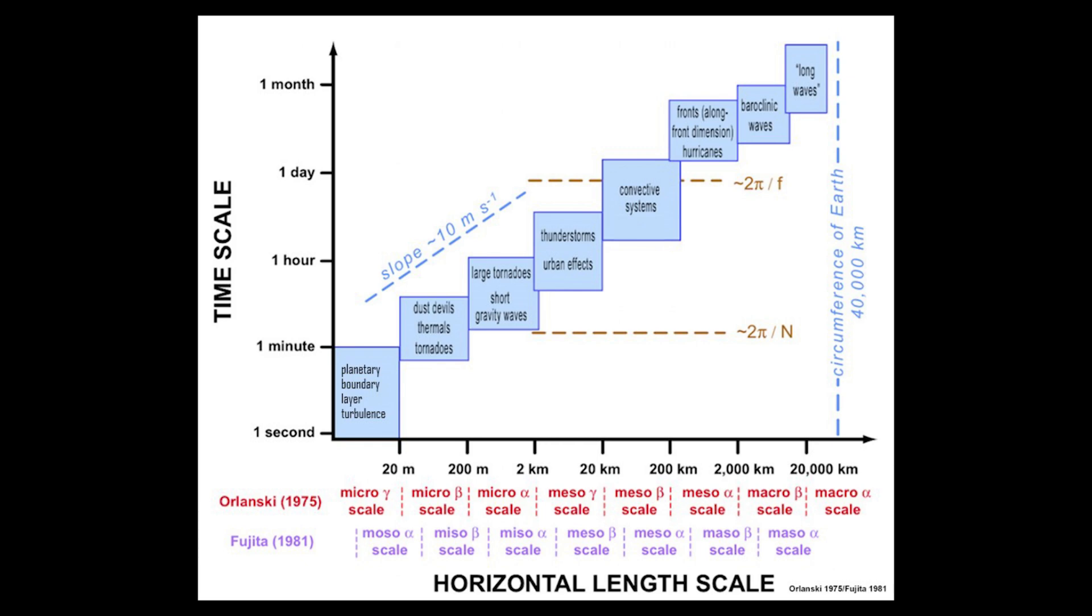When figuring out what the smallest scale feature is that a model can resolve, you look at the lower end of that feature. Using thunderstorms as our example, which cuts off around 2 kilometers, the minimum grid spacing to effectively resolve a thunderstorm would be 2 kilometers divided by 5 grids, which equals 0.4 or 400 meters. On the high end of that range is 20 kilometers, divided by 5 grids, which equals 4 kilometers or 4,000 meters.